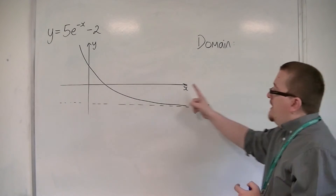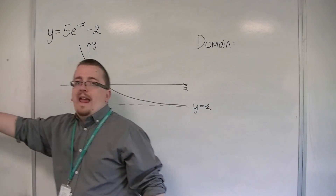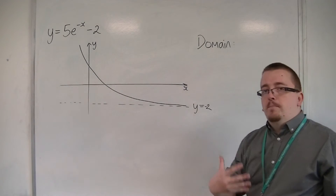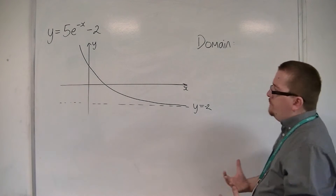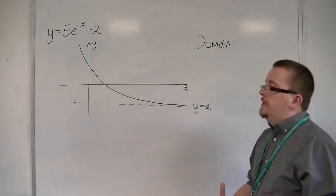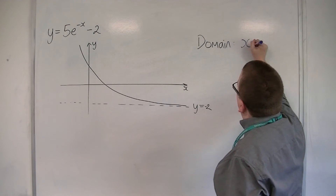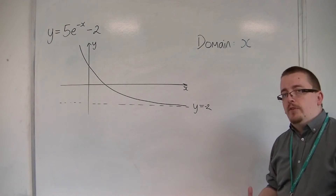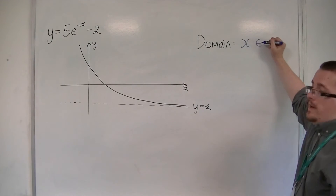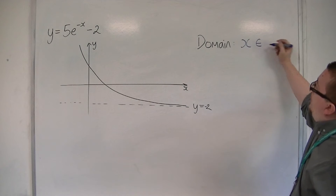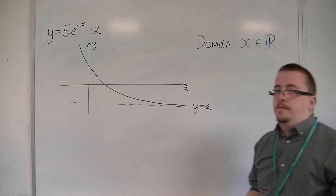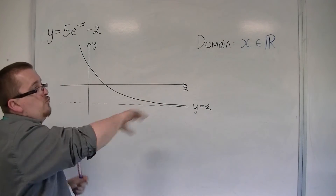So, actually, it can take any value of x in any direction — any real value of x. And so, I could say that the domain is any real number. Because we are mathematicians, we want to abbreviate. What we can say is that x belongs to the real numbers. The symbol for belongs to is this symbol here — it's kind of a c with an extra line, it looks like an e. And the way that we abbreviate the real numbers is by this symbol here. This is just telling me that x can be any real number at all.